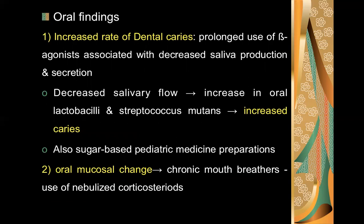Moving on to oral findings in asthmatic patients — these patients have an increased rate of dental caries. The reasons include the prolonged use of beta agonists, which are bronchodilators, associated with decreased saliva production and secretion. Decreased salivary flow leads to an increase in salivary bacteria such as lactobacilli and Streptococcus mutans, thereby increasing caries. Additionally, pediatric medicine preparations are usually sugar-based to improve palatability, providing a substrate that further promotes caries.